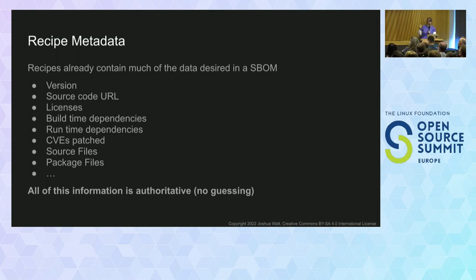Version, source code, control URL, licenses — that's all there. Build time dependencies and runtime dependencies are explicit and available. The CVEs that have been patched are explicit. Source files, package files — it's all there, it's part of the recipe, it's authoritative. You're not going to be guessing. We need to take where that knowledge is and export it so that people aren't having to dig around — it's just there at the fingertips without thinking too hard about it.